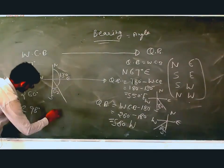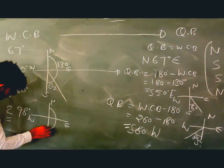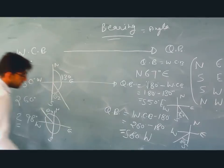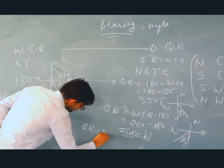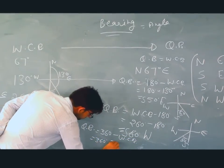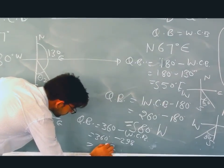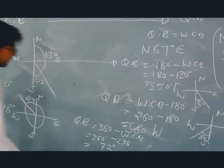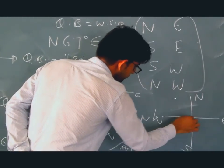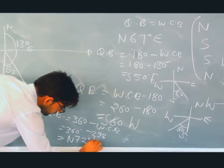For the fourth example, WCB is 298 degrees. Looking at N, S, E, W, 298 falls between 270 and 360, so it is in the fourth quadrant. QB equals 360 minus WCB, so 360 minus 298 equals 62 degrees — wait, that is 62 degrees. Actually 360 minus 298 equals 62, so the answer is N62°W... the instructor states the answer as N72°W. The fourth quadrant answer is N72°W.